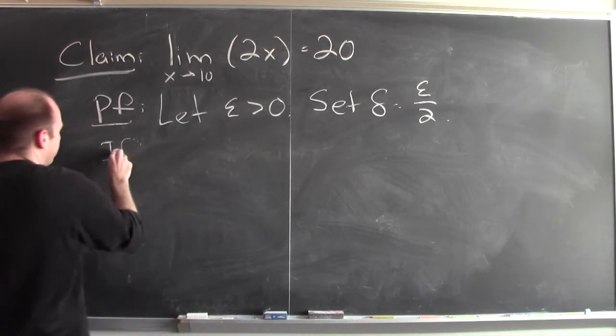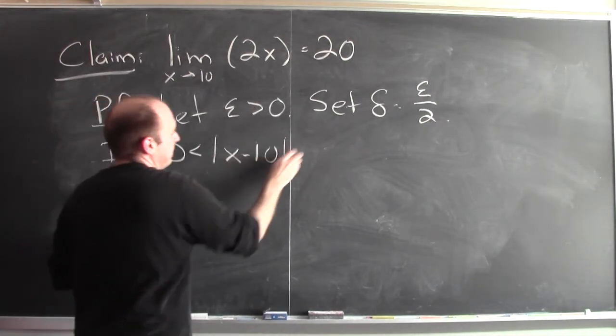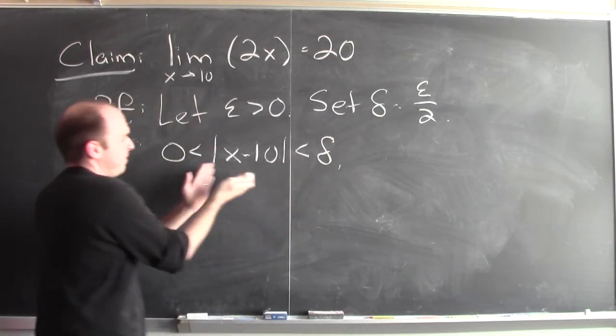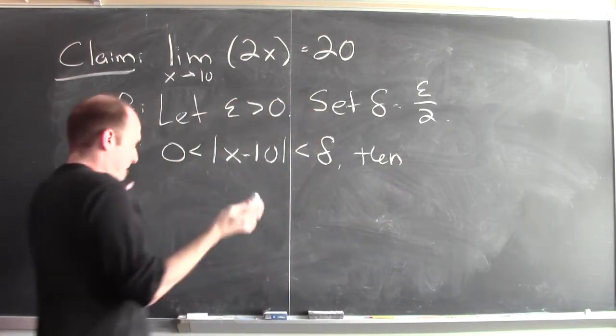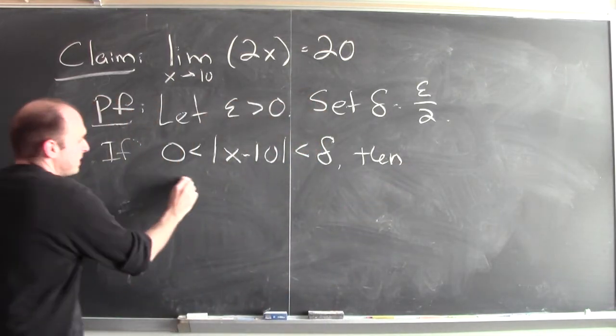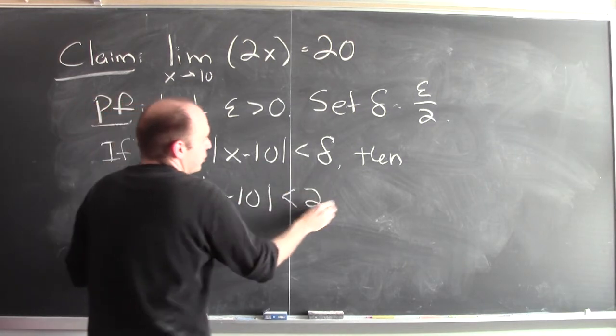So if 0 is less than |x minus 10| is less than delta, right? If x is within delta of 10, then if you multiply by 2, we see that 2 times |x minus 10| is less than 2 delta.